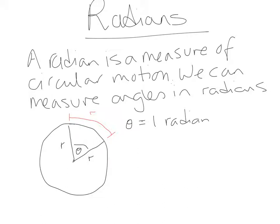One radian is different depending on the circle that you are looking at. But basically, you take the radius of a circle, you move around the outside of the circumference that same length, and the angle in between — which is called a sector, so the angle in the sector — is theta, or you could call it x, but it's equal to one radian.